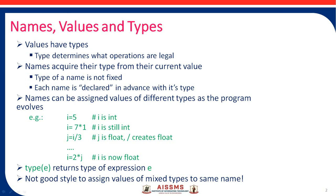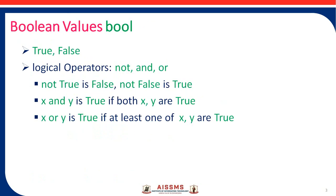It is not good style to assign values of mixed types to the same name. When you need to use different values, use different names in your program. Now after that we will look at another kind of value called boolean values. These values are true and false, and they are represented using the bool keyword.